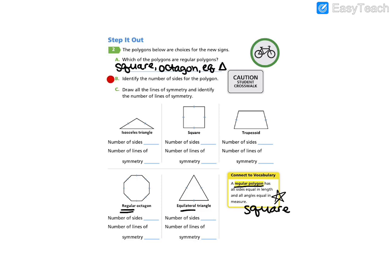Go ahead and do step B. Pause the video and identify the number of sides for the polygons. All right, now we're going to go ahead and draw our lines of symmetry.